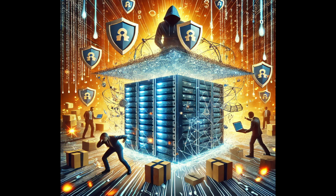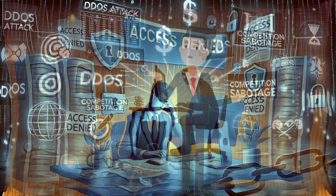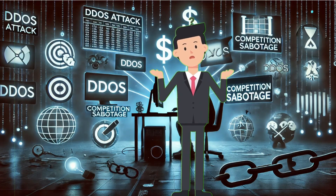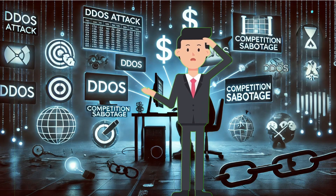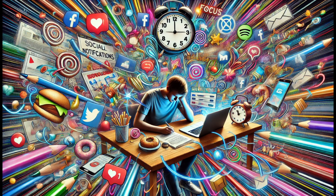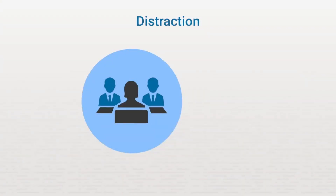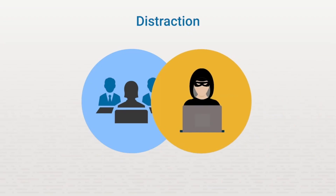DOS and DDoS attacks don't provide the attacker with access to a resource. Instead, they prevent an authorized user from obtaining access to information or services. So if the attacker doesn't get access to the network, why would they even bother with a denial-of-service attack? One reason may be to simply create a distraction. If the network team is distracted by a denial-of-service attack, that might create an opportunity for an attacker to infiltrate the network, download sensitive data, or cause damage without being noticed right away.